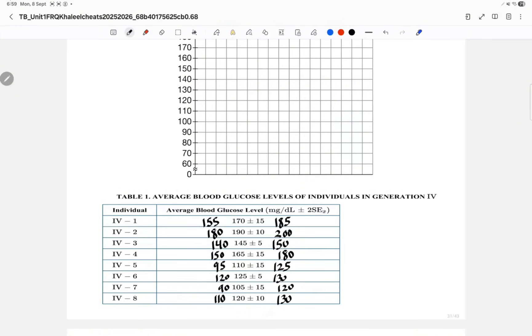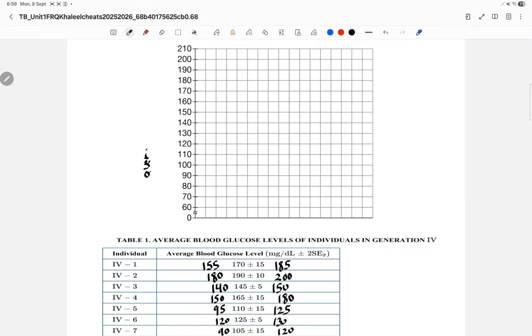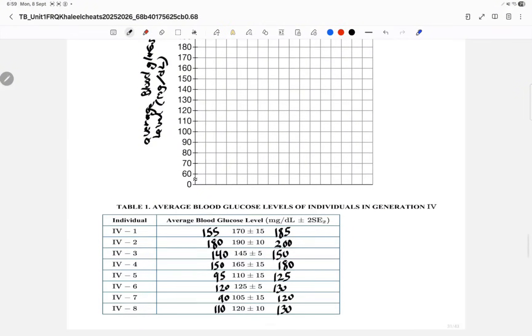We have eight individuals, and those numbers will go on the y-axis. So on the y-axis, we have—you must label it of course—average blood glucose level, along with the unit which is mg per dL.